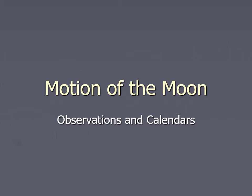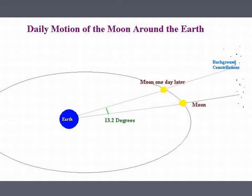But there are other things that are happening. As the moon goes around the Earth, it moves a little bit every day — roughly 13 degrees, a little bit more than 13 degrees a day.